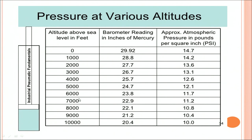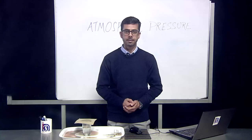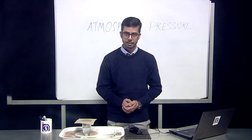As we start increasing the height from the sea level and go to 10,000 feet, the barometer reading decreases to 20.4 and the atmospheric pressure in pounds per square inch goes down to 10. Through this table it is easy to demonstrate that if the height increases, the atmospheric pressure decreases.